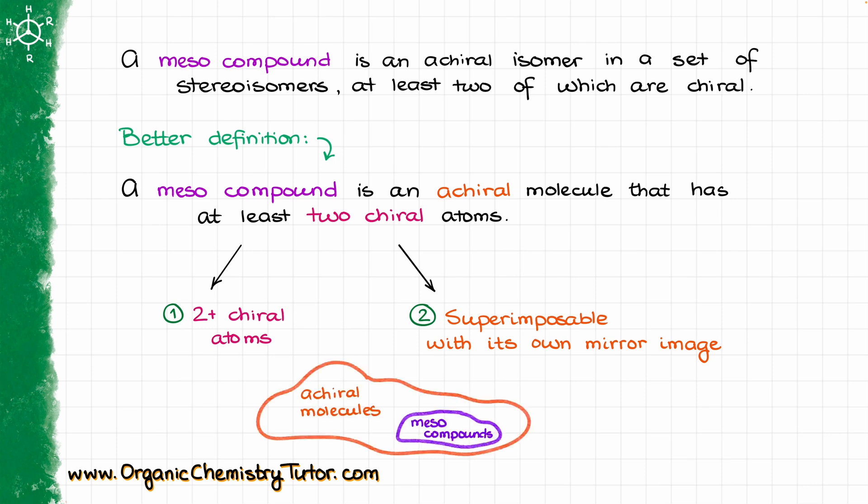This essentially means that the meso compound is a subclass of achiral molecules. So all meso compounds are achiral, but only some achiral molecules are meso compounds.